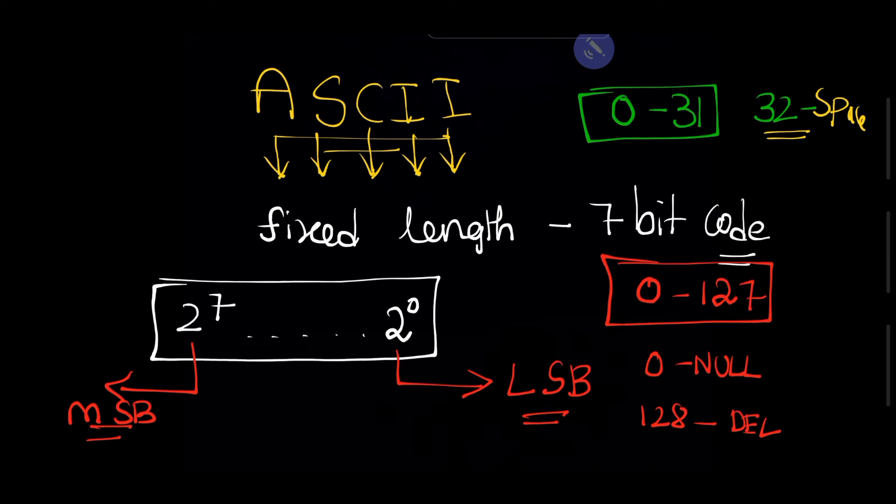There are some kind of special symbols: 32, 33, 34 like that. So we have dollar symbol, commas, semicolons, stars. Every symbol, every alphabet, every number has an ASCII code.